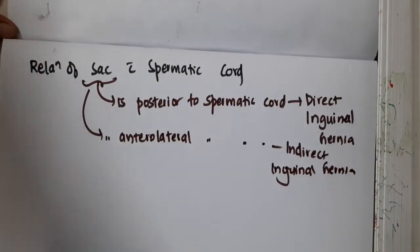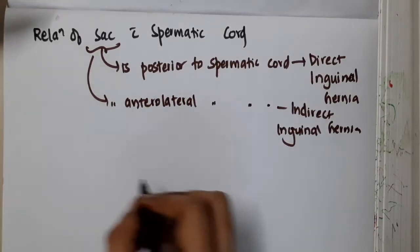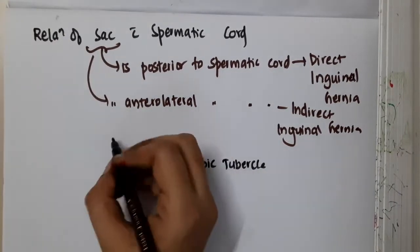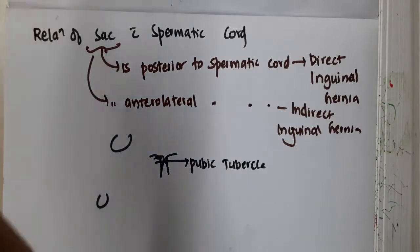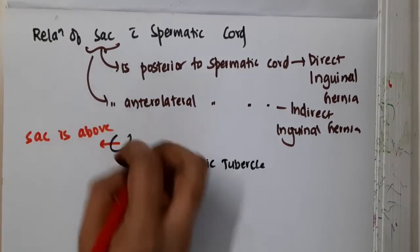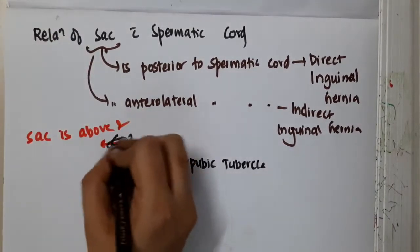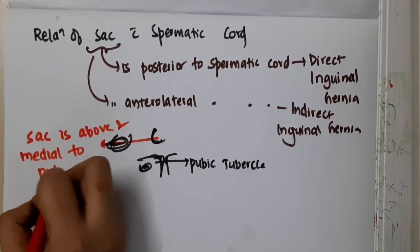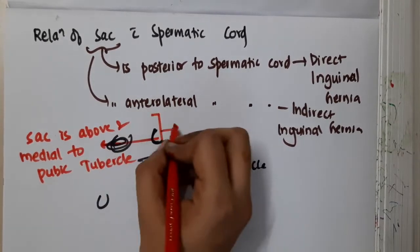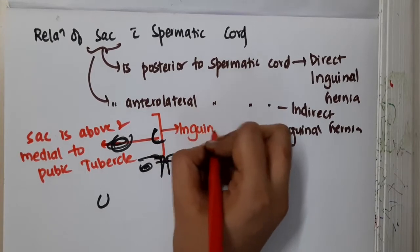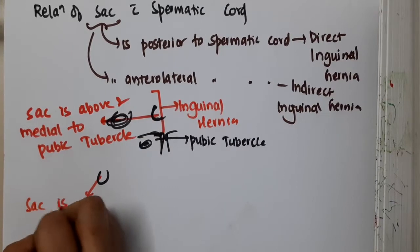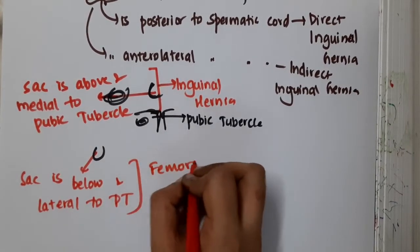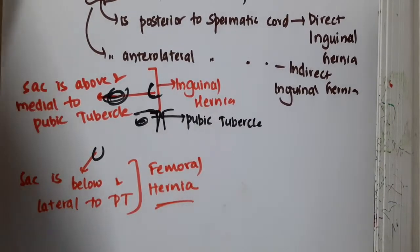Regarding the relation of the neck to the pubic tubercle: if the sac is above and medial to the pubic tubercle, then we call it inguinal hernia. If the sac is below and lateral to the pubic tubercle, then we call it femoral hernia.